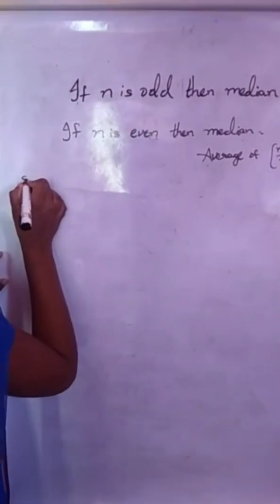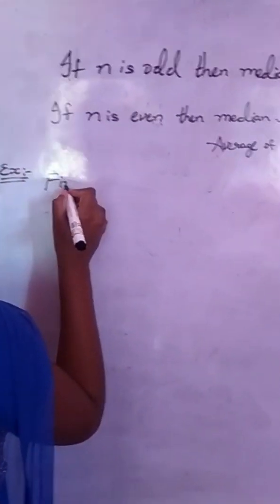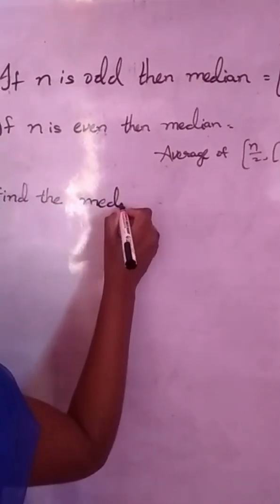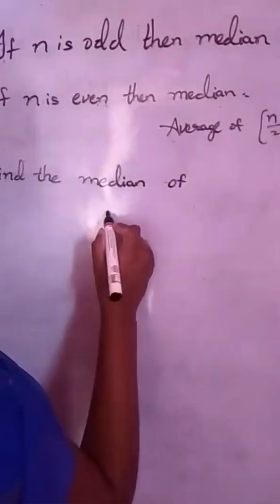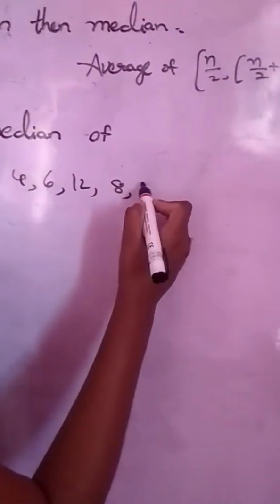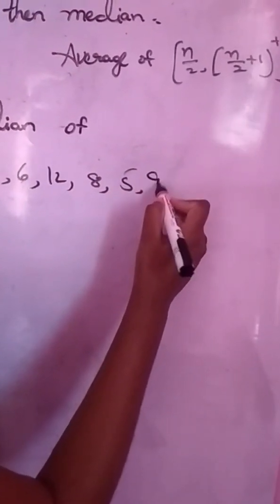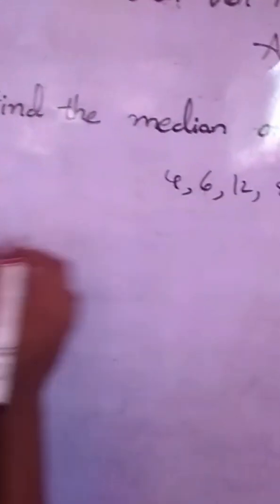Now, example. Find the median of 4, 6, 12, 8, 5, 9, 16. Now solution. You have to write in ascending order.